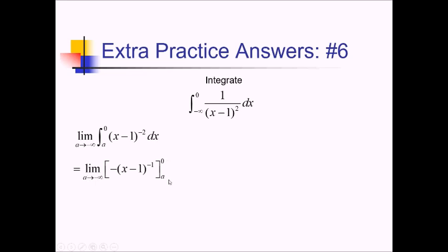Plugging these numbers in, with 0 plugged in I get negative 1 over 0 minus 1, and with a plugged in — since this is already negative — I'm doing plus 1 over a minus 1. The first term comes out to negative 1 over negative 1, which is just 1. For the next term, as a approaches negative infinity, this is a bottom-heavy function, so it goes to 0. So 1 plus 0 is just 1.